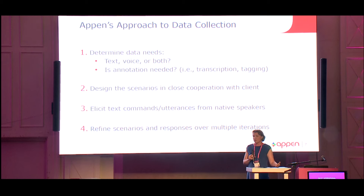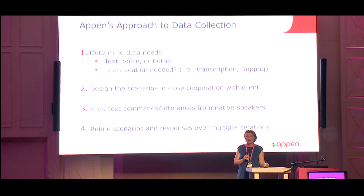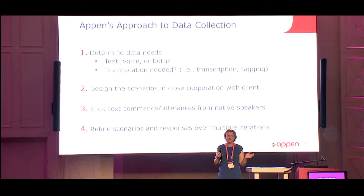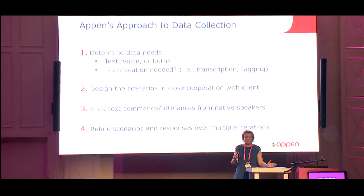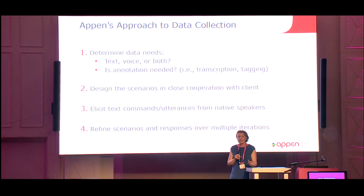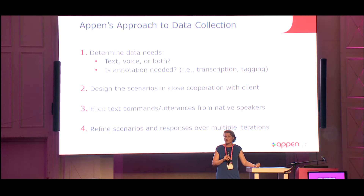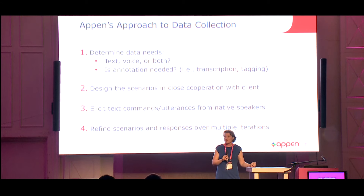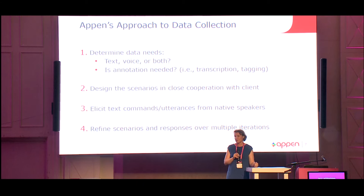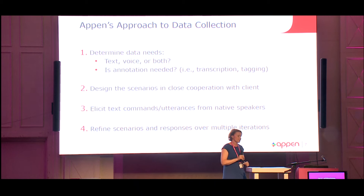We run the data collection with a crowd selected according to the demographics described earlier. For example, if a function or intent in your application has something to do with switching on air conditioning, users may formulate their intent in different ways — they may say 'I'm too hot', 'could you switch on the air conditioning', 'could you lower the temperature'. We try to encourage our users to formulate several different answers so you get a variety of training data.